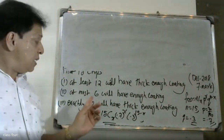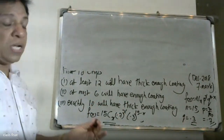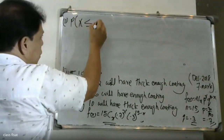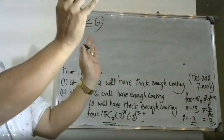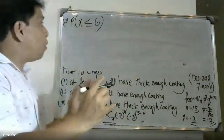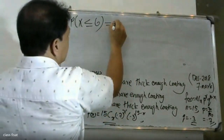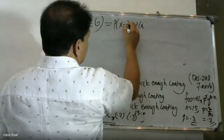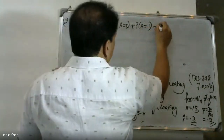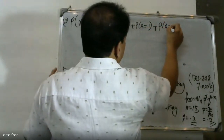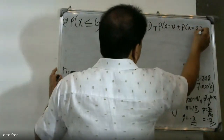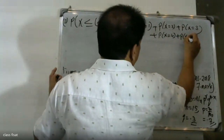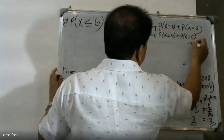Now for the second question: at most 6 will have enough coating. At most 6 means the maximum is 6, so the probability of X less than or equal to 6. This equals the probability X equals 0, plus probability X equals 1, plus probability X equals 2, plus probability X equals 3, plus probability X equals 4, plus probability X equals 5, plus probability X equals 6.